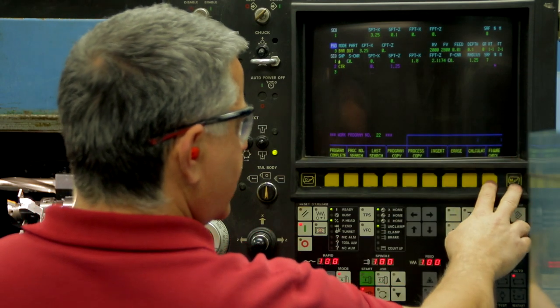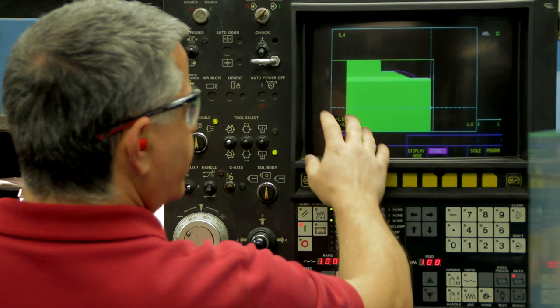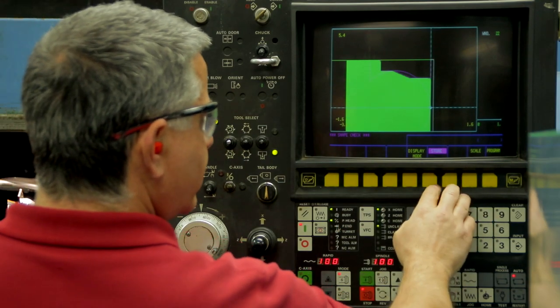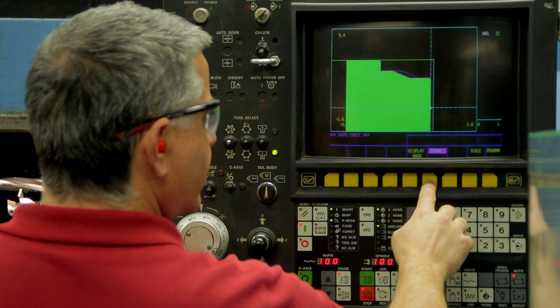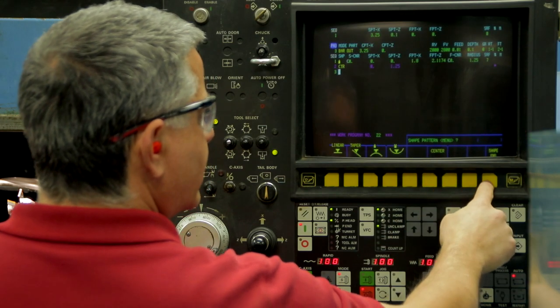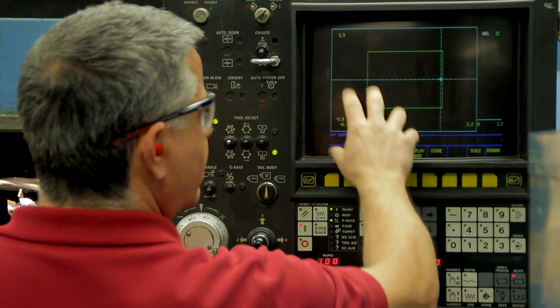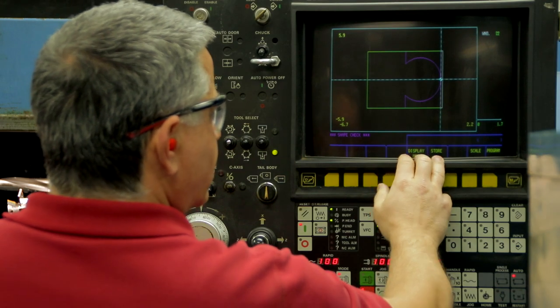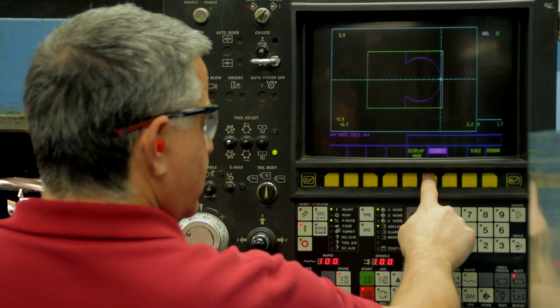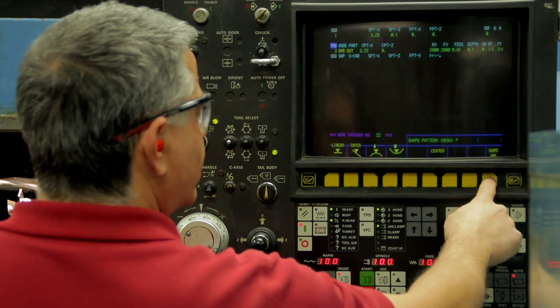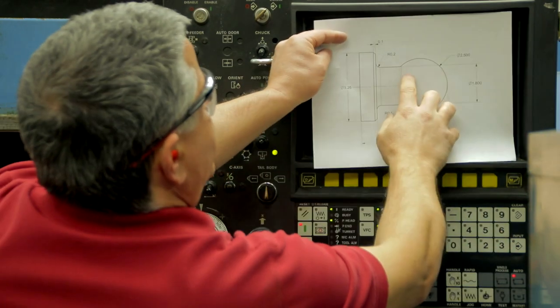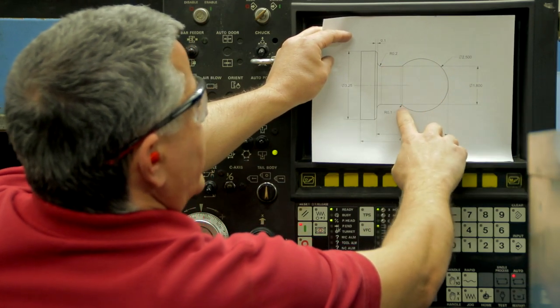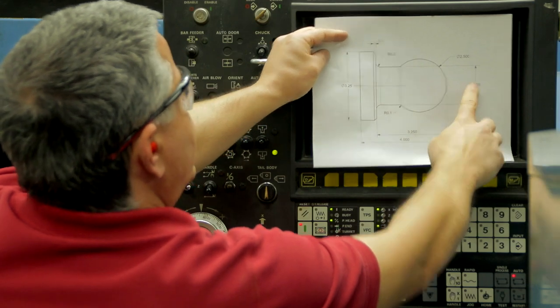push the right button, go calculate, and it calculated the Z position right there. If we go to the figure check screen, it has the previous job on here. Turn off the scale, the store, and go to program, and then figure check, and that redraws the shape. So now let's hit store, and go back to the program.